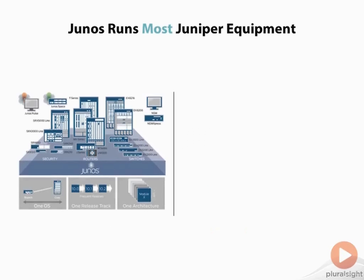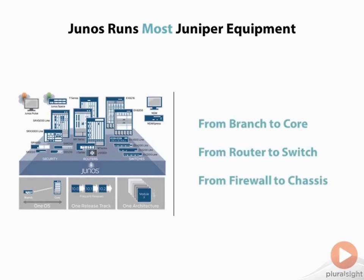Junos OS is used with most of the Juniper product line, with the exception of a few appliances like the SA series devices. But those are outside the scope of the JNCIA Junos certification track, so we don't really need to worry about those now. Junos runs devices from the branch to the core of the network, from routers to switches to firewalls. Because Junos is used across the board for most of Juniper's product line, you have a single software release track to keep track of and one architecture to learn. All Junos OS devices share the same base source code, so Junos is the foundation for learning just about any new Juniper device.